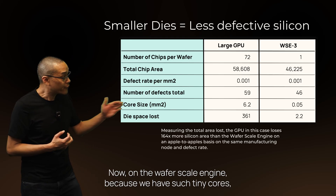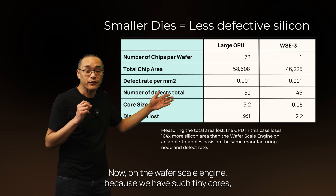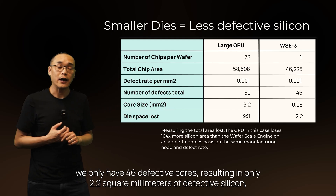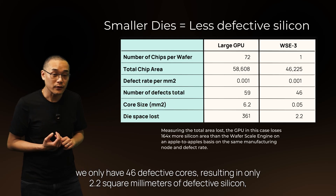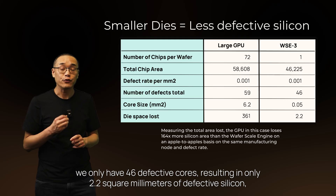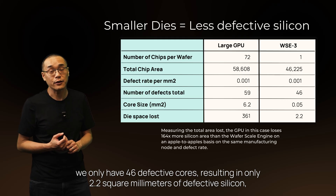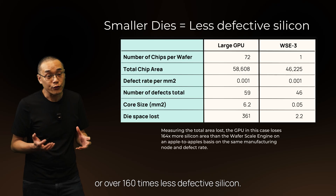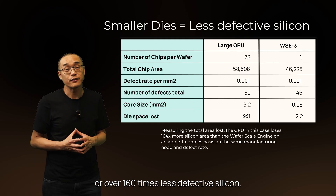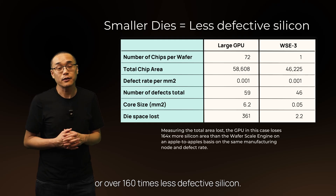On the wafer scale engine, because we have such tiny cores, we only have 46 defective cores resulting in only 2.2 square millimeters of defective silicon — over 160 times less defective silicon — because our cores are such fine grain.